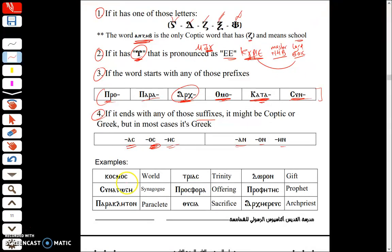The first word we have is Cosmos. I can see an Os at the end so I know it's Greek. So if I know it's Greek I can know that the Sima is gonna pronounce as a Z not an S. The next one we have is Treyas with the S which means Trinity. We have Doron with an On at the end which means gift. Then we have Synagogi with Sin. Prosphora we have Pro.